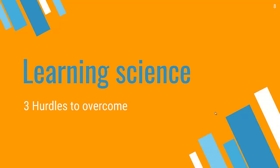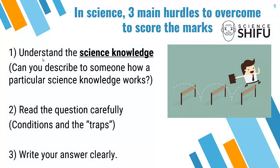In exam questions, there are three hurdles your child has to overcome. The first hurdle is understanding the science knowledge — meaning your child has the ability to describe whether a particular object is a good or poor conductor of heat, and why. For example, your child should be able to say: plastic is a poor conductor of heat because it takes in heat slowly and loses heat slowly, so its temperature won't change much over a short period of time.